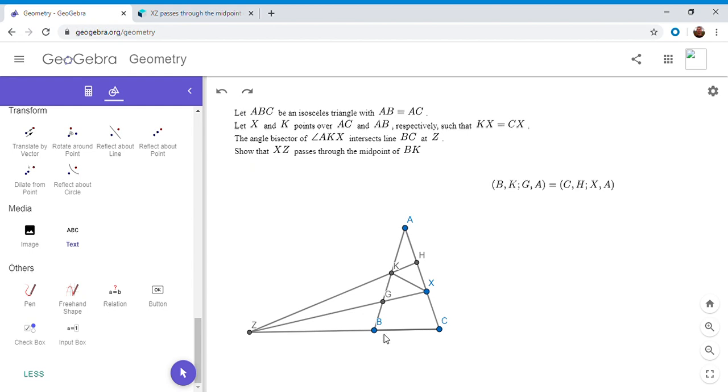For example, B, G, K, and A have a cross ratio, and C, X, H, and A have a cross ratio. It matters the order in which those four points are labeled. If you have an external point and you draw lines through the four points that constitute the cross ratio, and you see where they intersect another line, the four intersection points will end up having the same cross ratio.